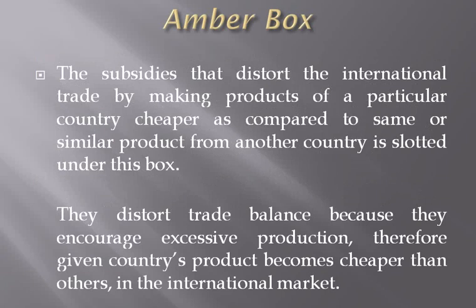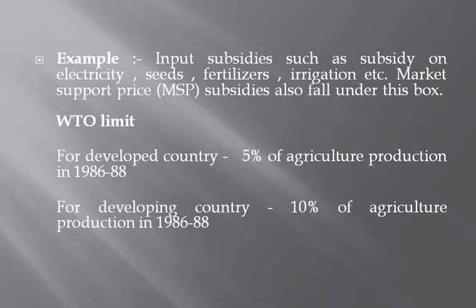Amber box subsidies distort international trade by making products of a particular country cheaper compared to the same or similar product from another country. They distort trade balance because they increase excessive production, therefore making a given country's product cheaper than others in the international market. Examples include input subsidies such as subsidies on electricity, seeds, fertilizers, and irrigation, as well as Minimum Support Price (MSP) subsidies.